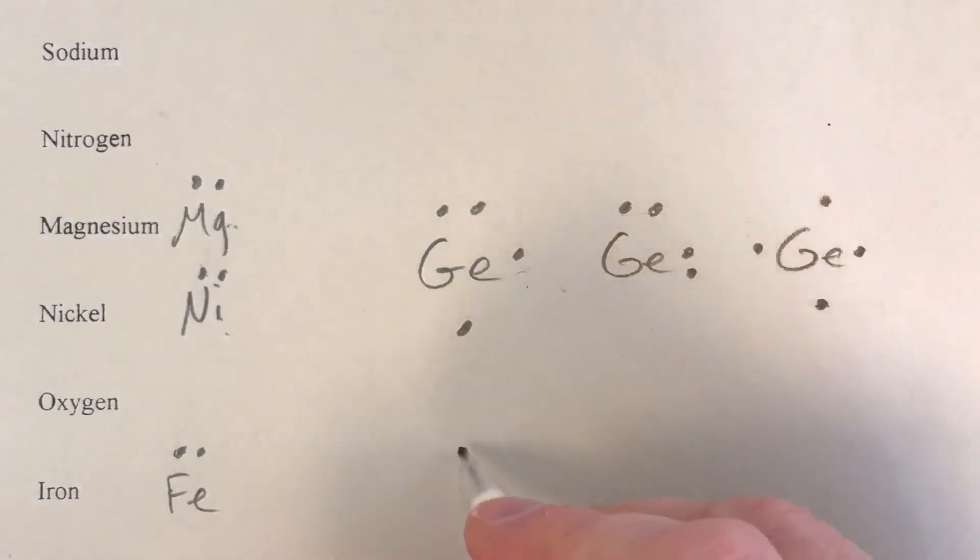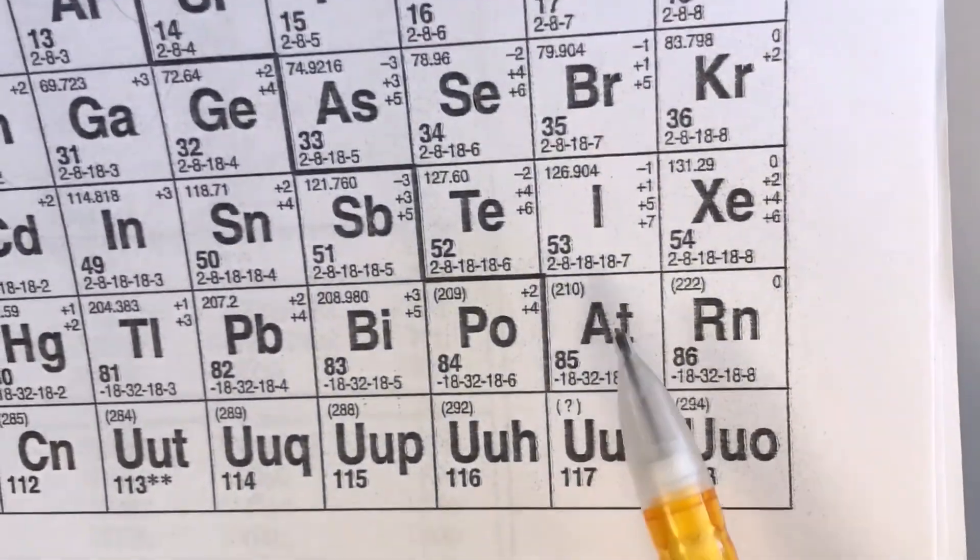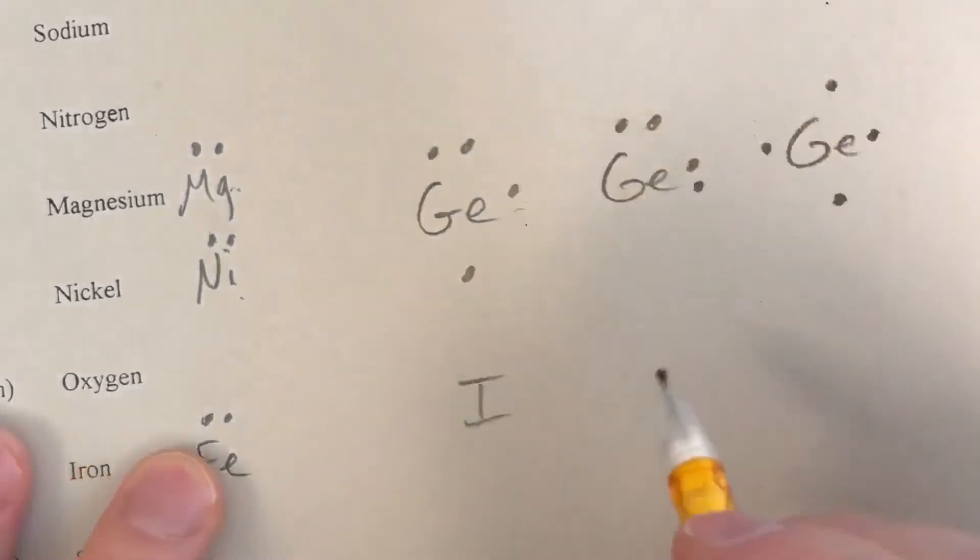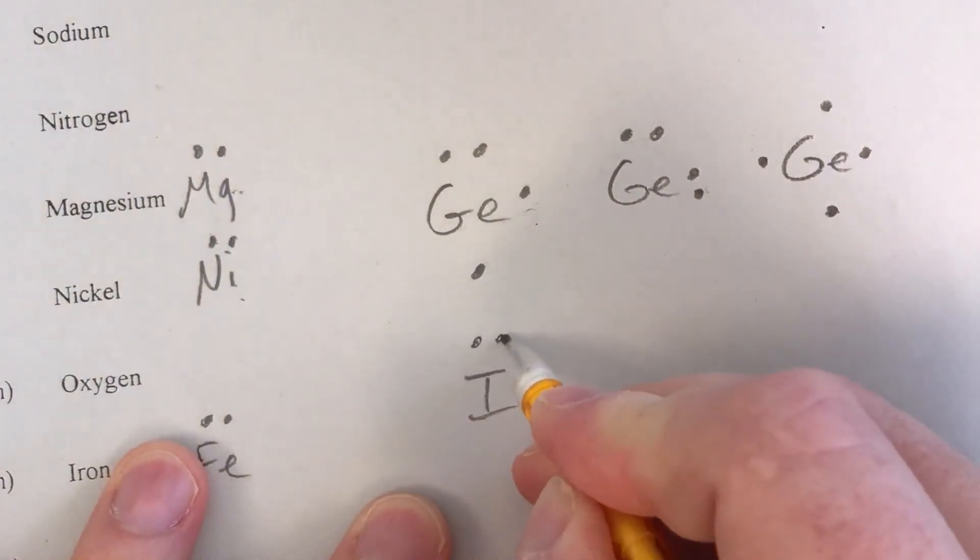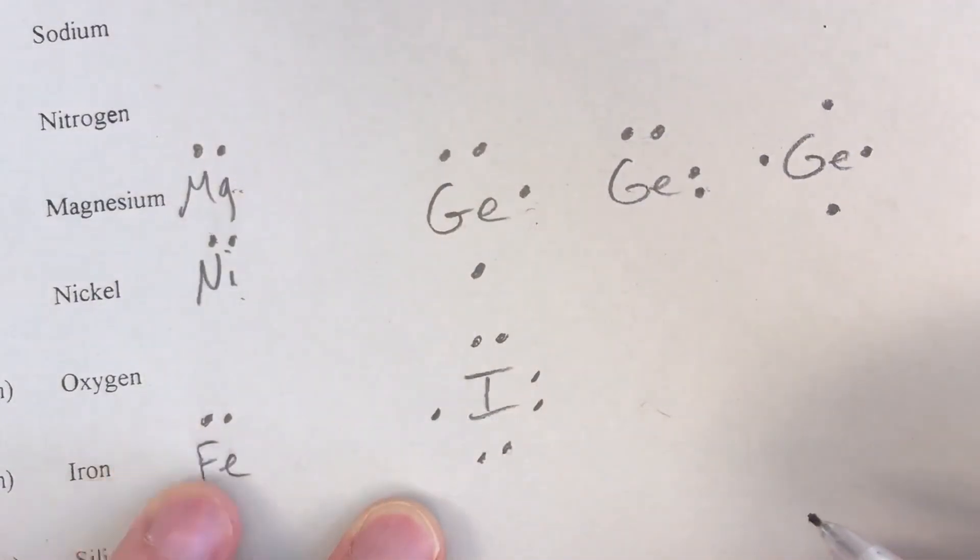A couple different options. The key thing again, you are pulling off of the reference table. If we did iodine, for example, just something different again from all these that have twos, iodine we notice has seven valence electrons. Again we're only using the outer number. We can have our first two at the top and then we would have three, four, five, and then come back around six, seven for the pairs.